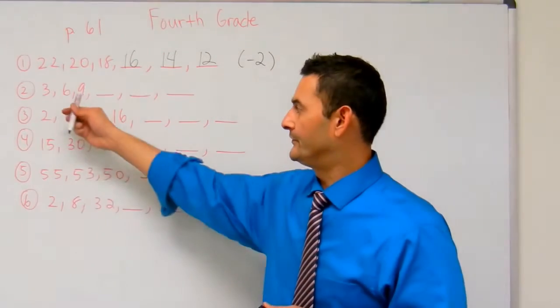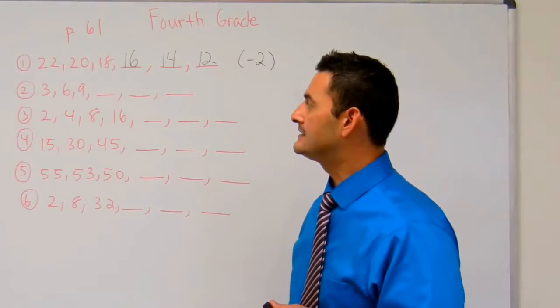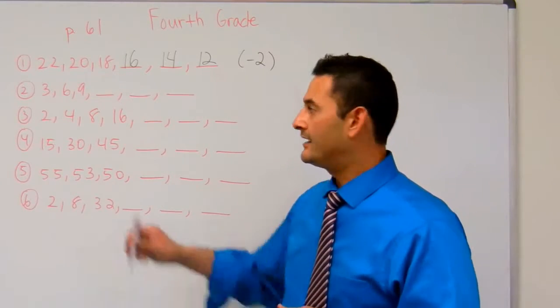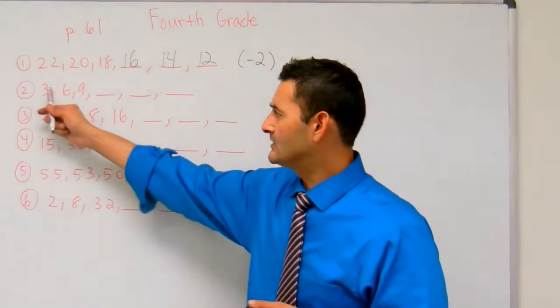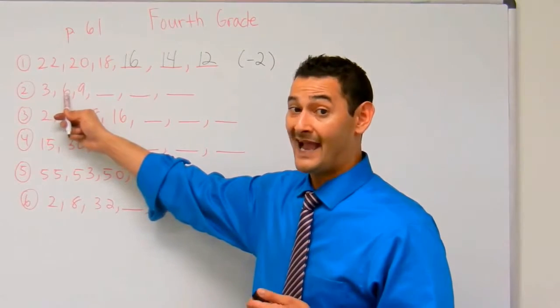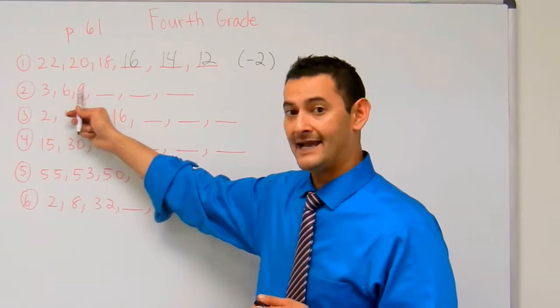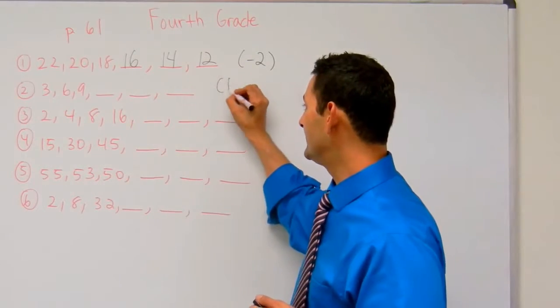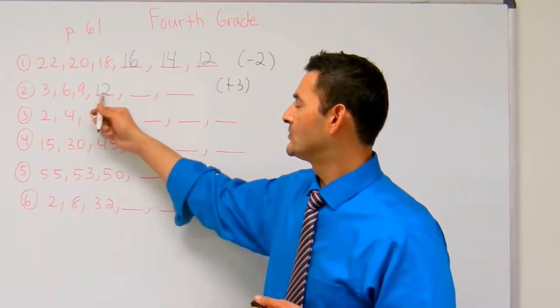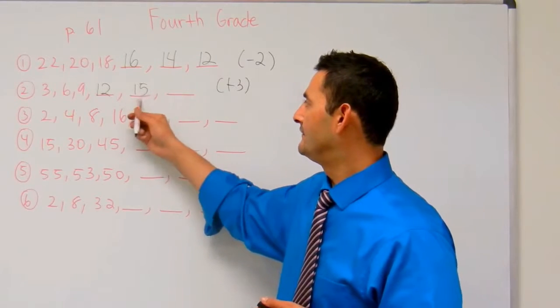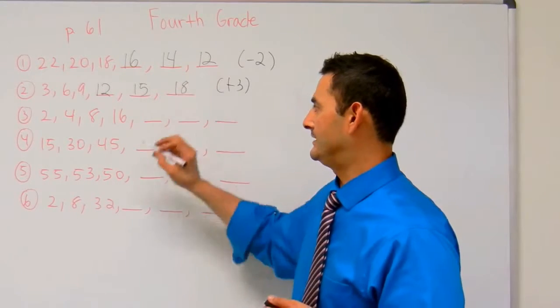Now let's take a look at number 2. Here I've got 3, 6, and 9. How did this 3 become a 6? I could add 3. 3 plus 3 is 6. Now let's try adding 3 to 6. 6 plus 3, is that 9? Yes, it is. So the rule is plus 3. 9 plus 3 is 12. 12 plus 3 is 15. 15 plus 3 is 18.